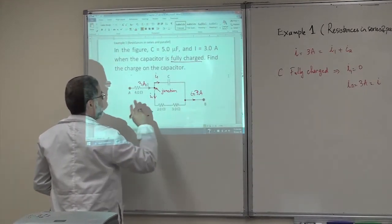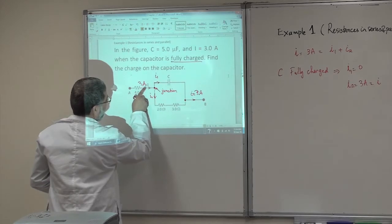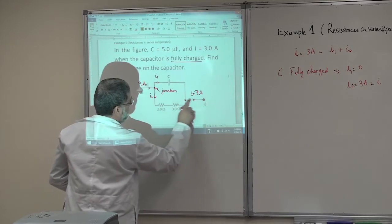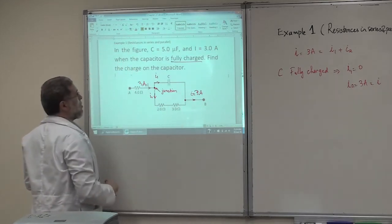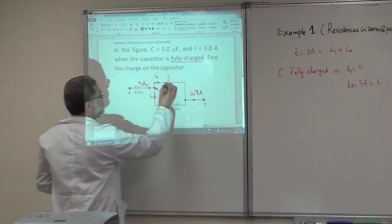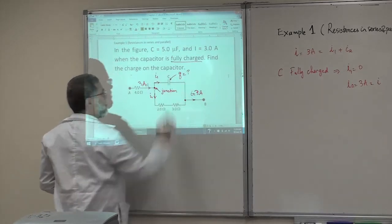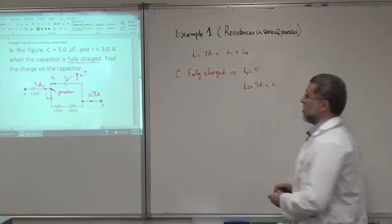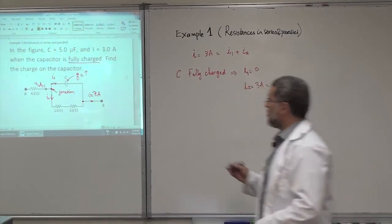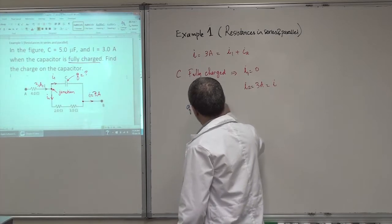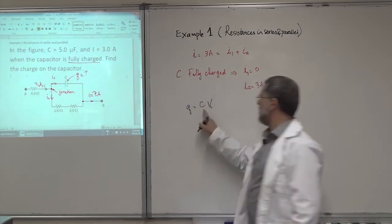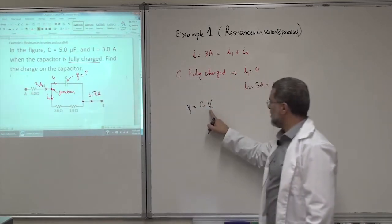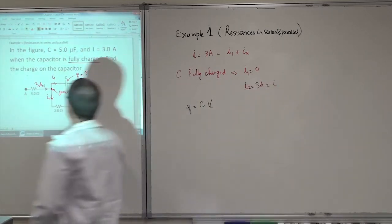This becomes like an open circuit — there will be no current through the capacitor branch. The current will go through the resistance and come back. We want the charge Q on the capacitor. The charge Q is equal to C times the voltage on the capacitor, V_C.